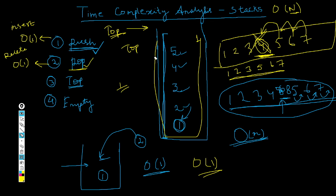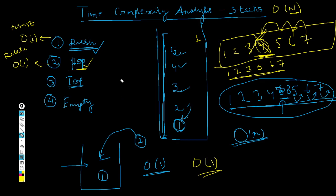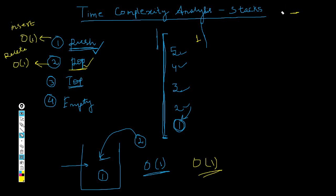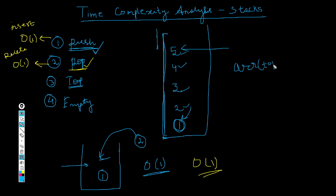Now let's move forward to the top operation. The top operation returns the topmost element of the stack, which is again just a single step. If we declared the stack using an array, we simply return array[top], which is a single operation. So in the worst case, accessing the top element is O(1).